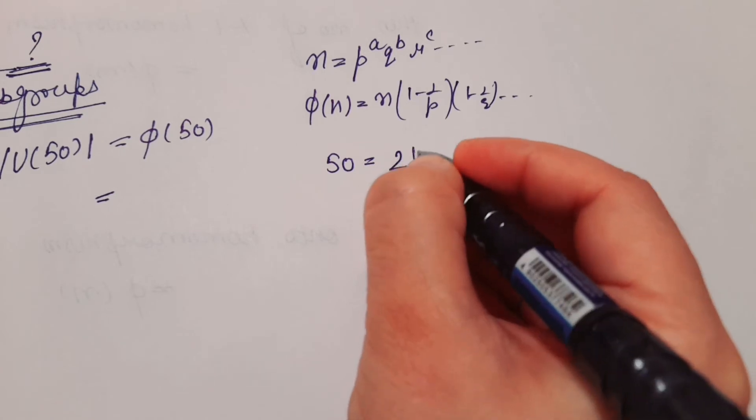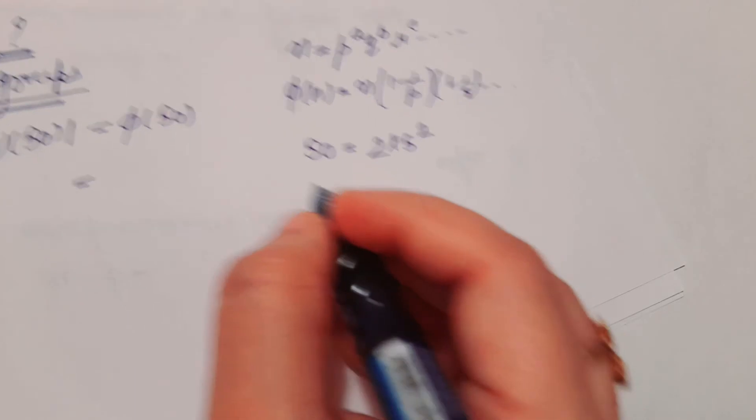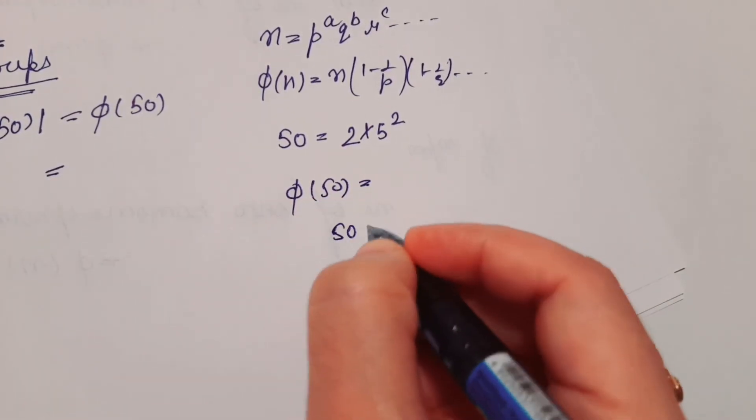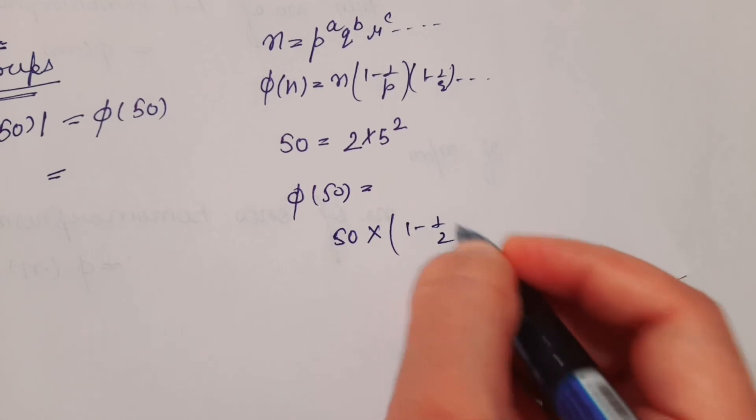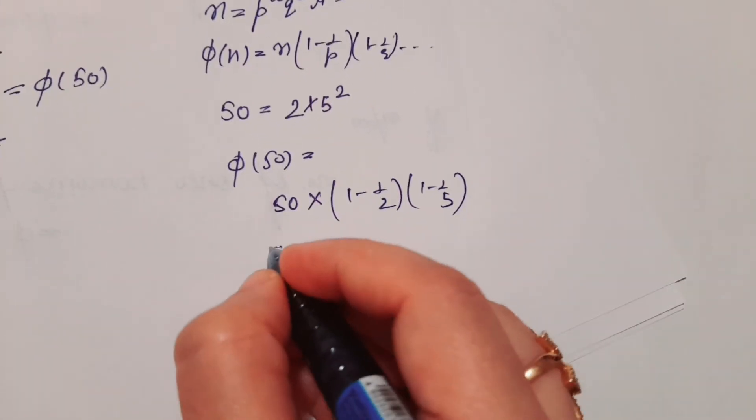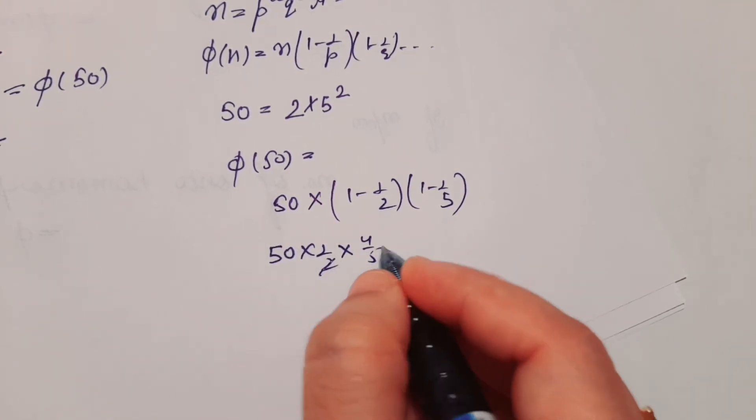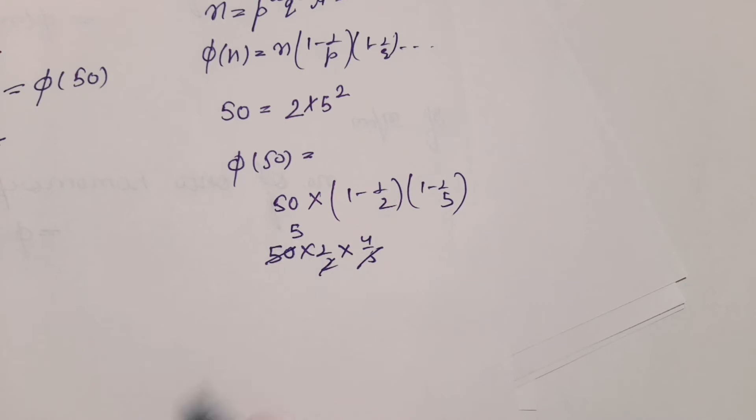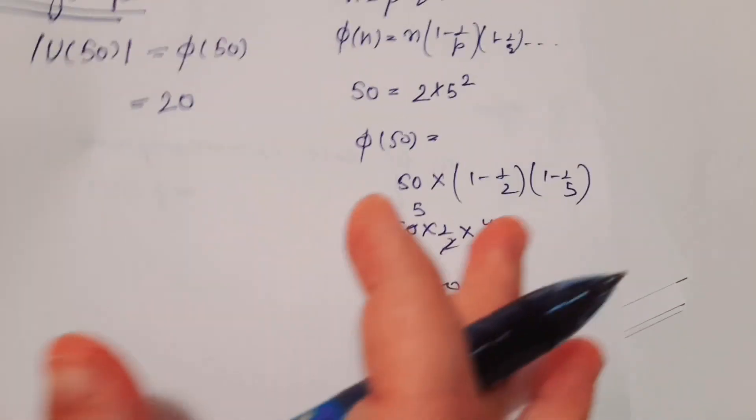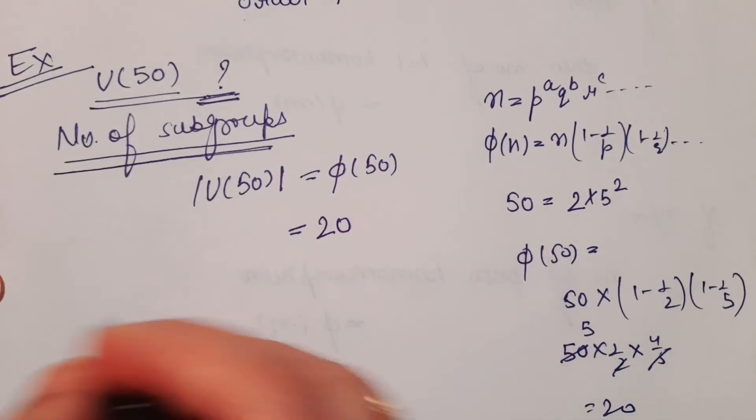So we can write φ(50) = 50 × (1 - 1/2) × (1 - 1/5) = 50 × 1/2 × 4/5. This gives us 10 × 4/5, which equals 20. So φ(50) = 20, meaning the order of U(50) is 20. Therefore, the number of subgroups equals τ(20).